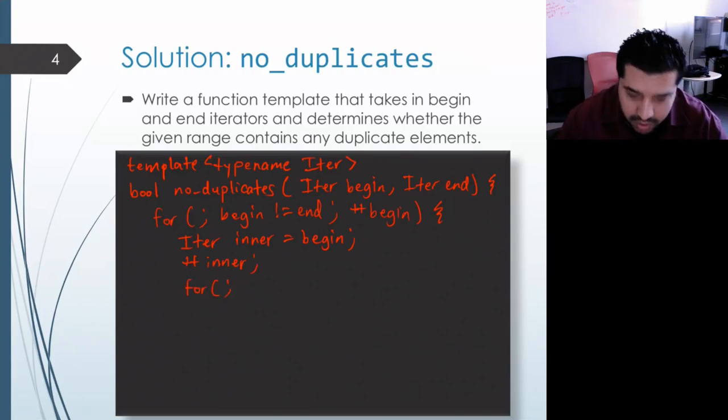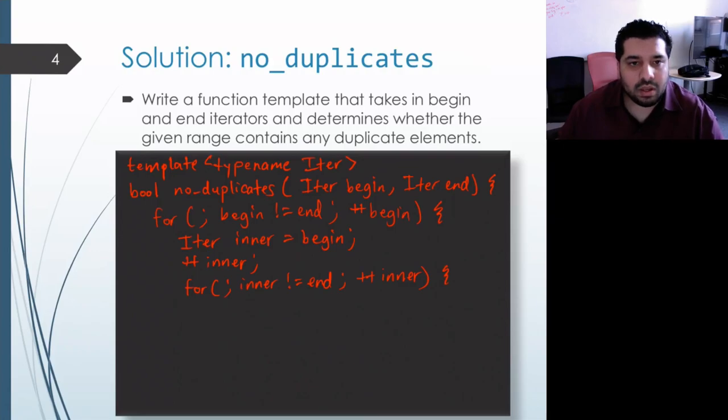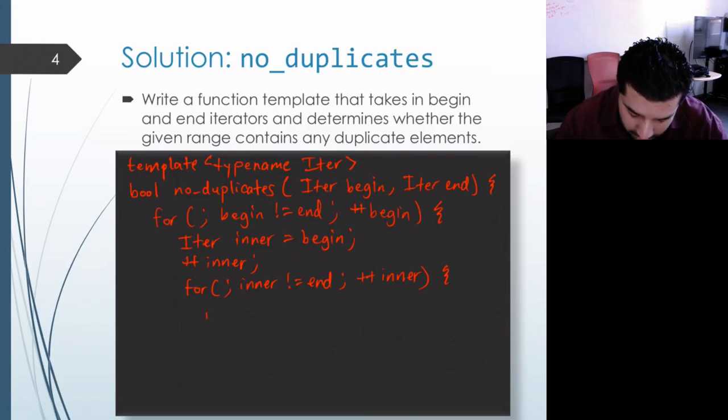Once again in our for loop we're not going to be declaring anything. We'll stop when inner gets to end and we'll increment inner to move it pointing to the next element after each iteration of the inner loop. Okay now we can go ahead and compare and see if begin and inner are pointing at elements with the same value, so we'll dereference both of them using the prefix star operator.